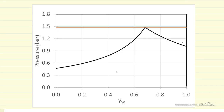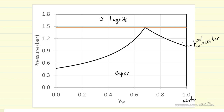At low pressure we have only a vapor phase. At high pressure we have two liquids that do not mix. This point corresponds to pure water — this is the saturation pressure of water, so lower pressure is only vapor, higher pressure is only liquid. At this pressure, which is 1.01 bar at 100 degrees C for water.